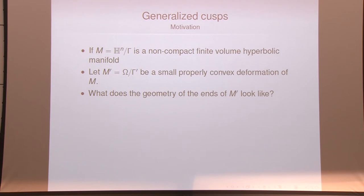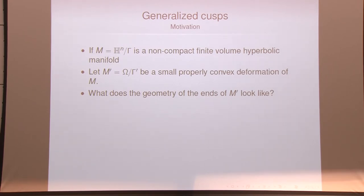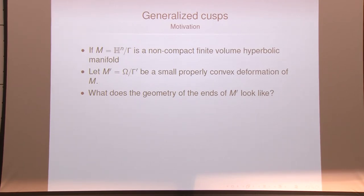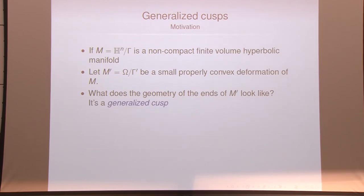Now that we have background on properly convex manifolds, I want to start talking about what generalized cusps are and why they're a good class of manifolds to think about. If you start with a non-compact finite volume hyperbolic manifold and do a small properly convex deformation, a question you might ask is: what sort of geometry does the end have? We understood very well in the hyperbolic setting what the geometry looked like, and we'd like to understand it when we start doing deformations. The answer is that it's a generalized cusp.